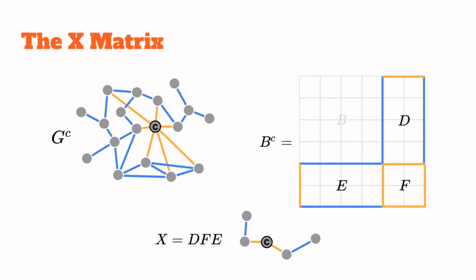With these blocks, we define one more matrix X as D times F times E. This matrix turns out to also be a binary matrix that indicates the existence of non-backtracking paths of length 4 of the type blue, yellow, yellow, blue. These are exactly those paths that are destroyed when the target node is removed. So in the top left block B, we have the structural information that is kept after the removal, while X contains the structural information that is destroyed.